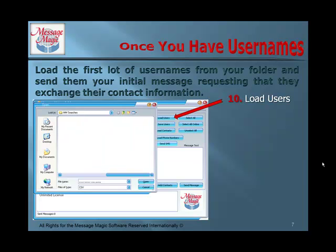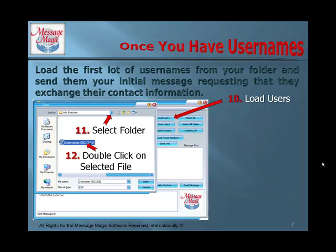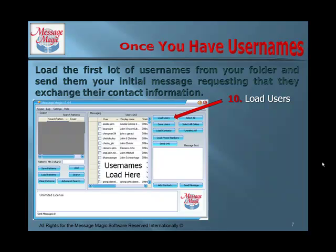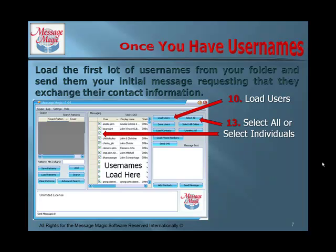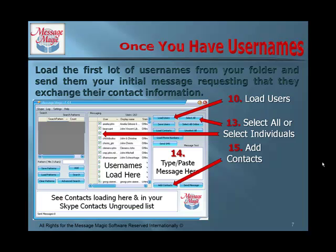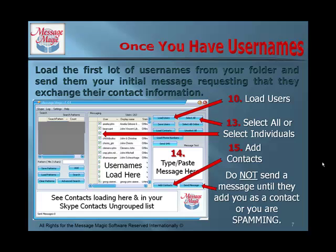Click on Load Users and your browser window will open. Select the folder where your username list is, then double-click on the selected file. Your usernames will load here. Select all, or select individuals, whichever you choose. Type and paste your message here, and click on Add Contacts. You can see your contacts loading here and in your Skype Contacts Ungrouped list in Skype. Do not send a message until they add you as a contact, or you are spamming.